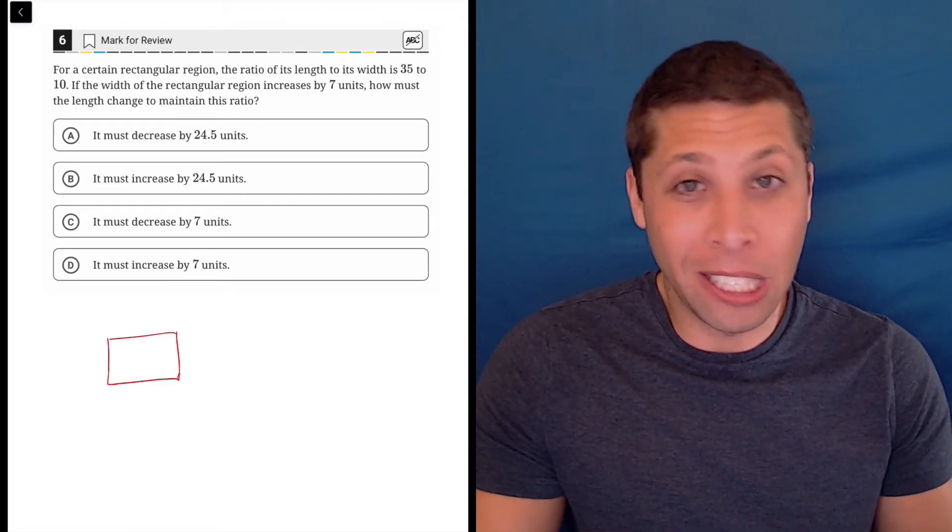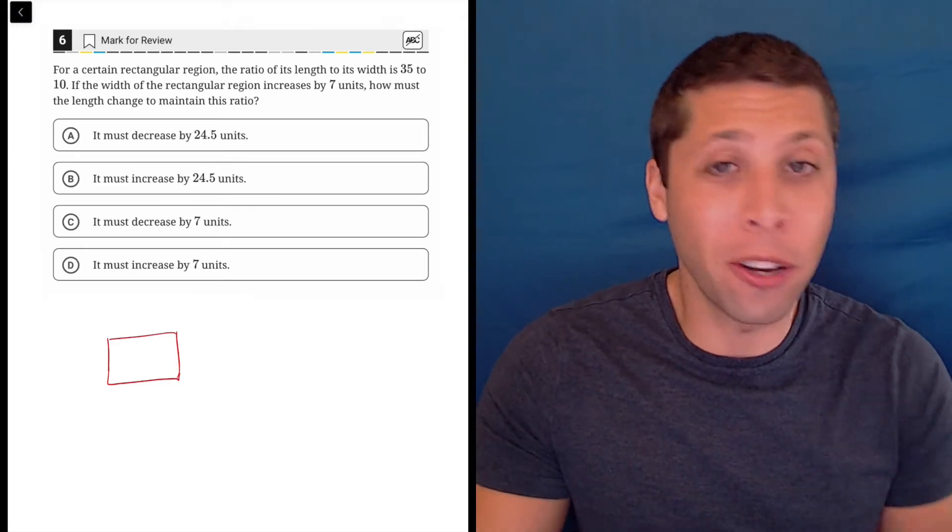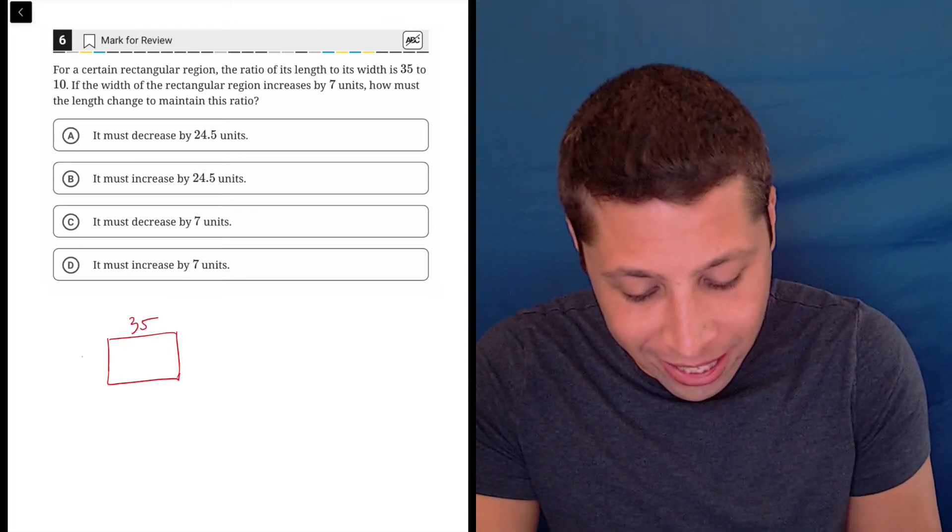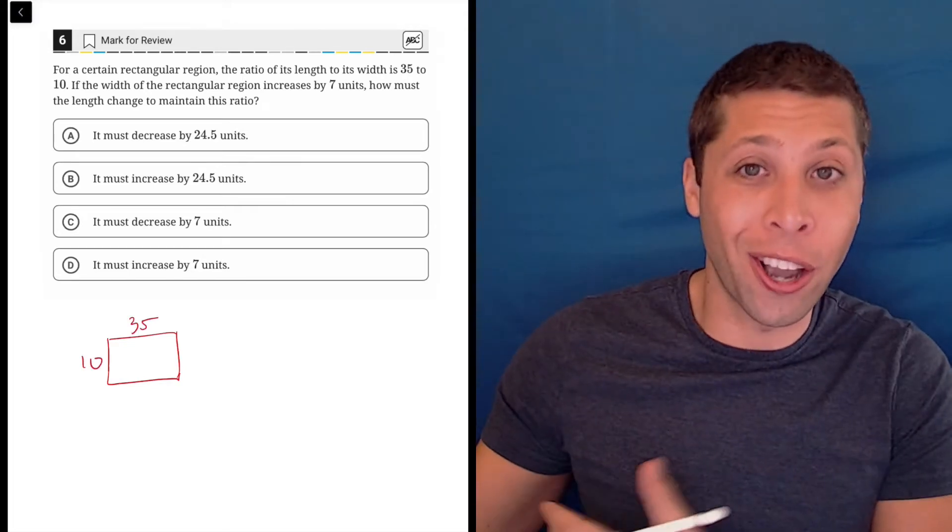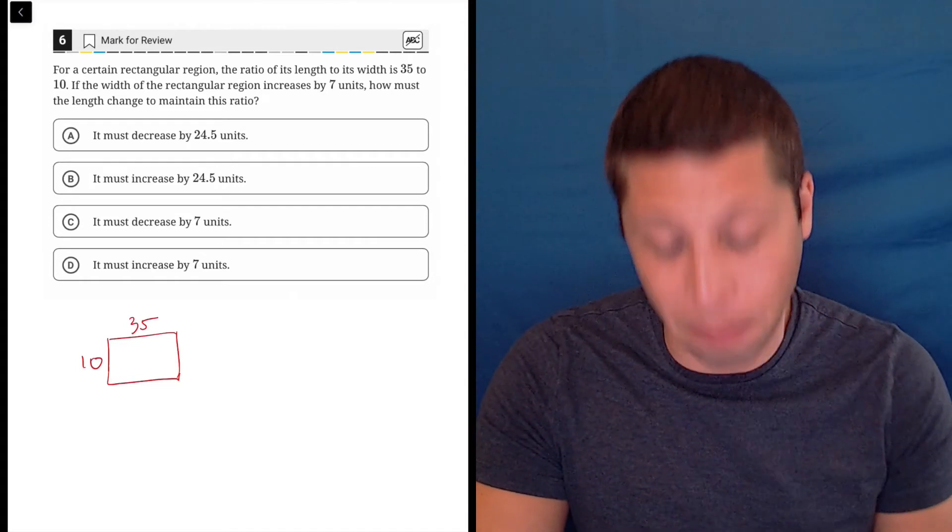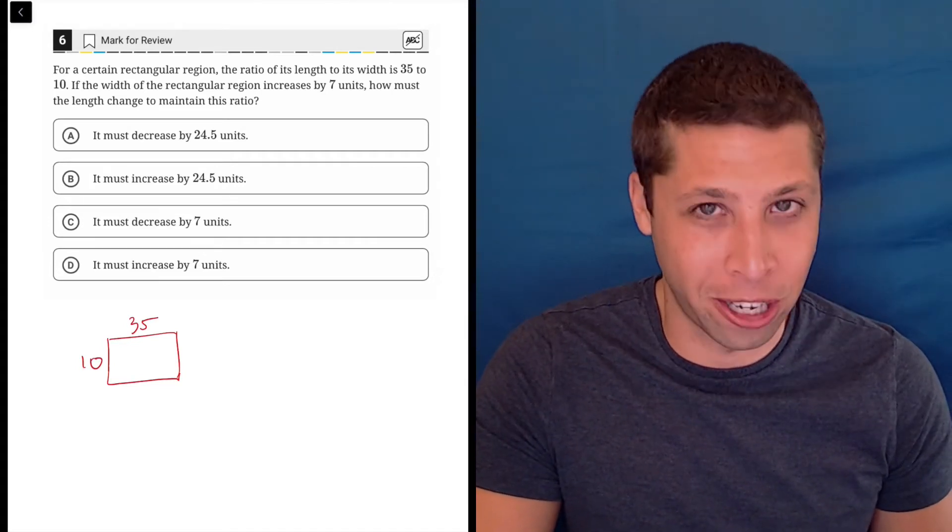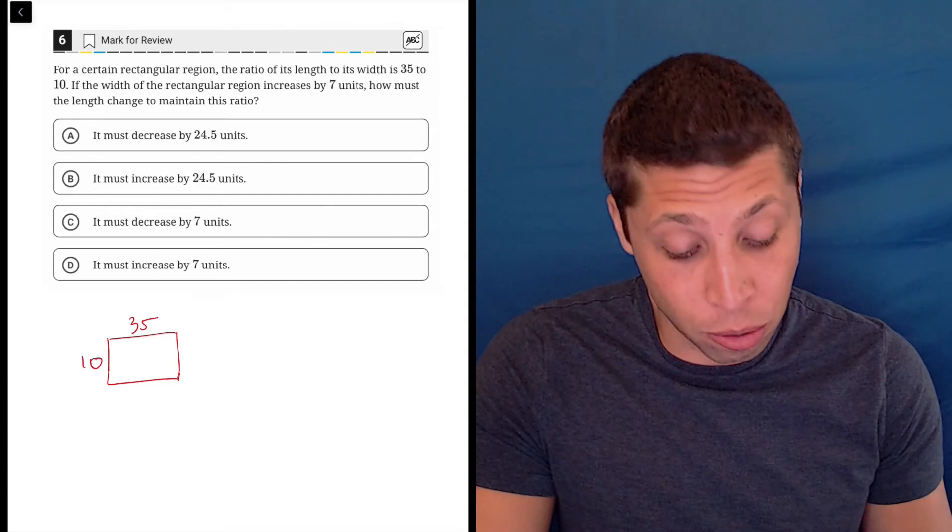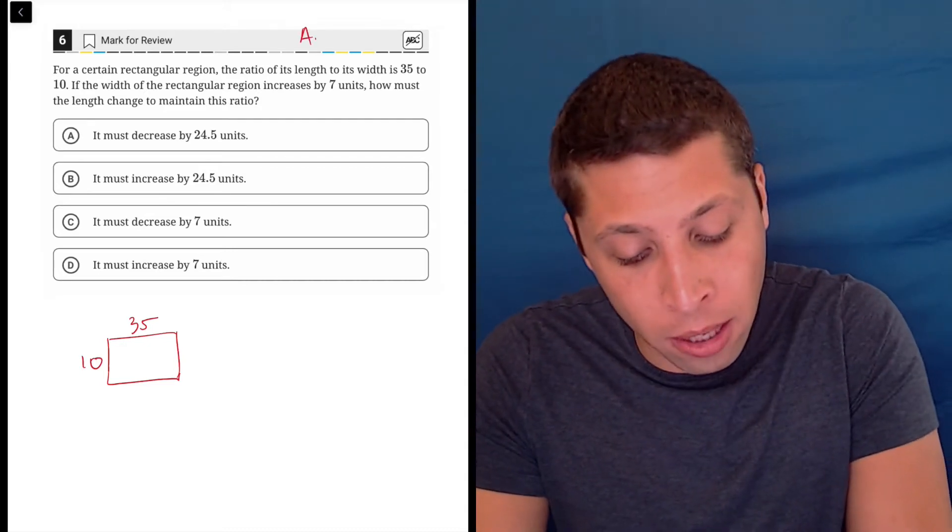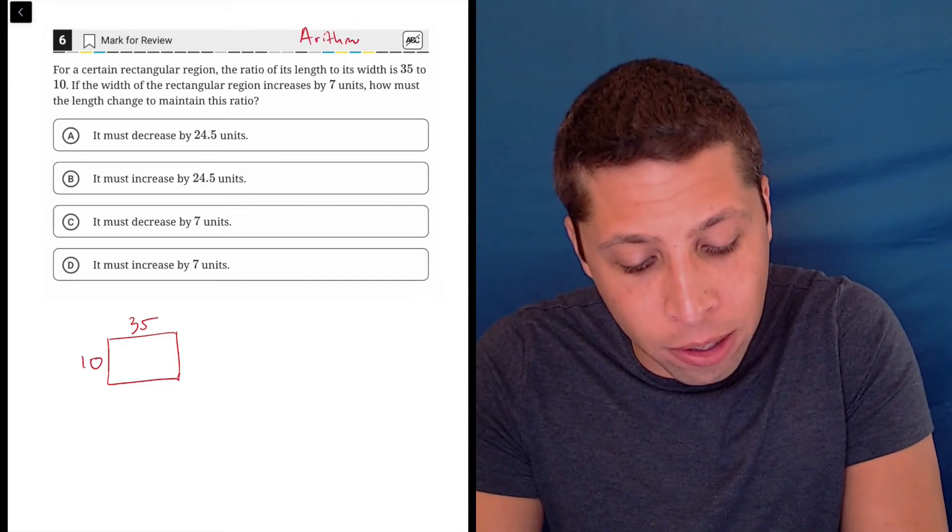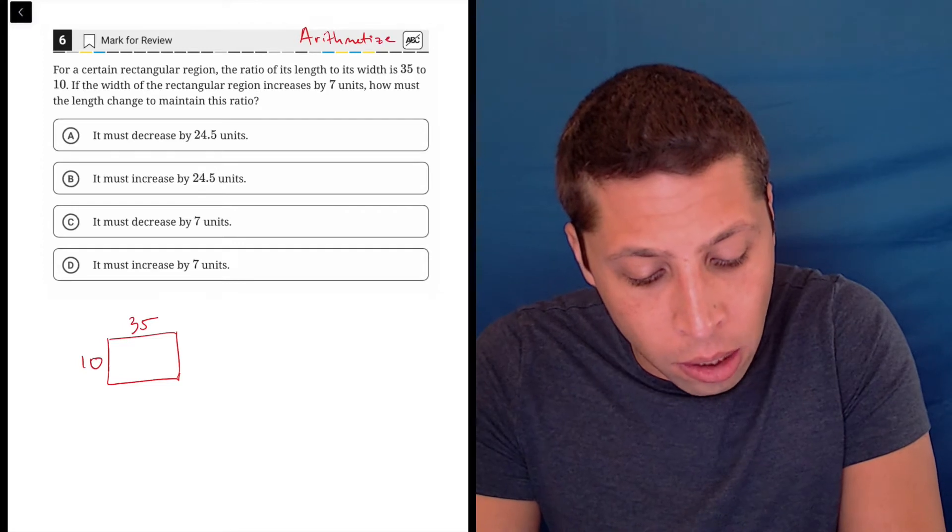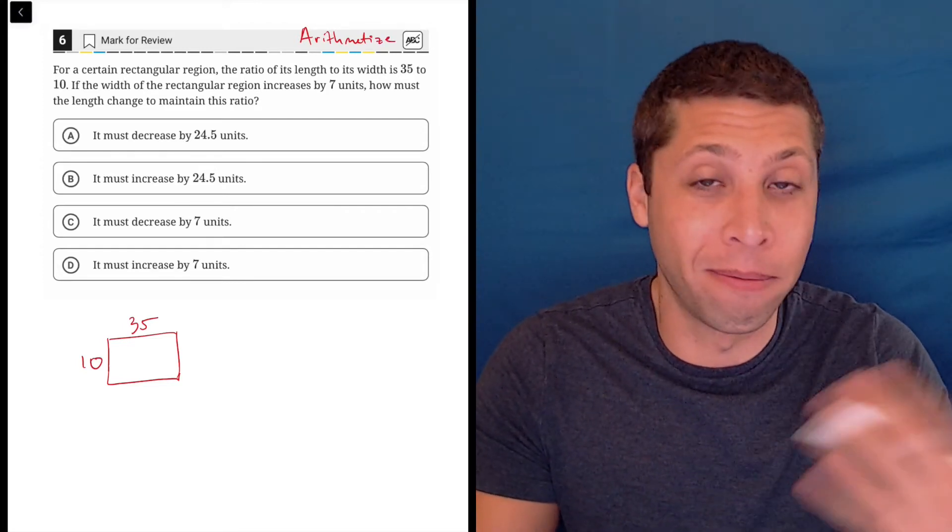We can just make the length and width 35 and 10 because 35 and 10 are in the ratio of 35 to 10. Those are the easiest numbers that we could pick to meet that ratio. This is what I would call an arithmetized question because even though we don't have the specific dimensions, we are just kind of making them up.